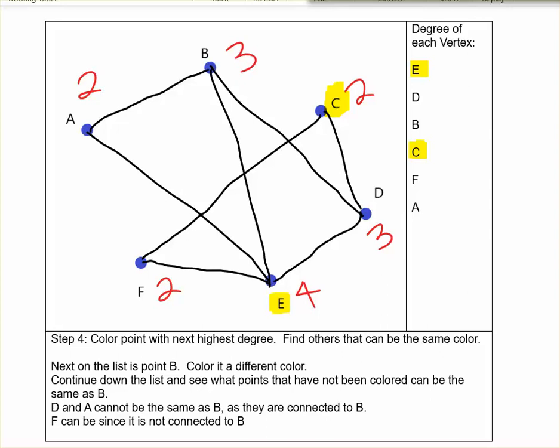Now we want to color the vertex with the next highest degree. It doesn't really matter if you do D or B. They both have a value of 3. So I just listed mine with D. So as I'm going down the list I've made my D green and then I'm going to look if the others can be the same color.